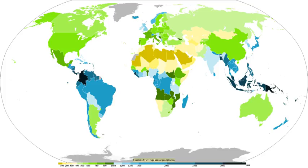Cloud tops with a lot of small-scale variation are likely to be more vigorous than smooth-topped clouds. Various algorithms use these and other properties to estimate precipitation from the IR data. The second category is in the microwave part of the electromagnetic spectrum, with frequencies ranging from about 10 GHz to a few hundred GHz. Channels up to about 37 GHz primarily provide information on liquid hydrometeors in the lower parts of clouds, while channels above 37 GHz are dominated by solid hydrometeors — snow, graupel, etc. — scattering microwave radiant energy. Satellites such as the Tropical Rainfall Measuring Mission and the Global Precipitation Measurement mission employ microwave sensors to form precipitation estimates.